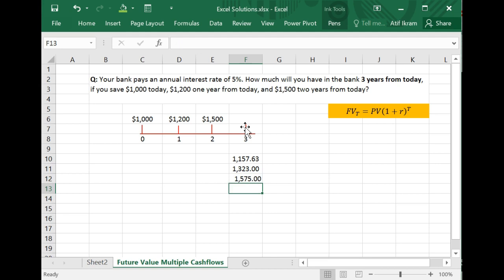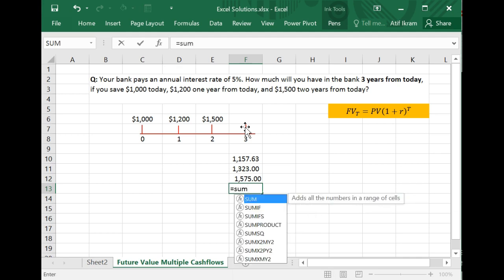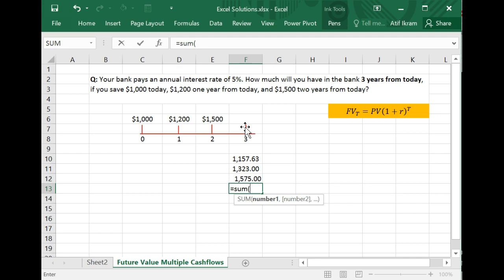And so now if you're interested in knowing what is the total amount that you will have by the end of three years, then all that you need to do is basically sum up these numbers. There's a nice function in Excel, which is called sum. So you just sum up these numbers. So you're summing up these three numbers. And when you do this, the total comes out to $4,055.63.